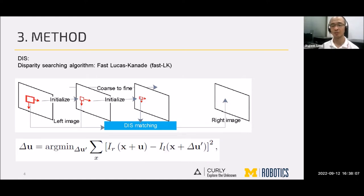The key of DIS is its disparity searching algorithm, that is, the Lucas-Kanade, FastLK. FastLK helps achieving the real-time patch-wise disparity searching.